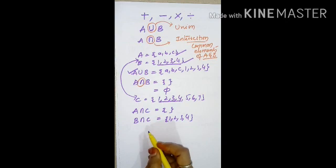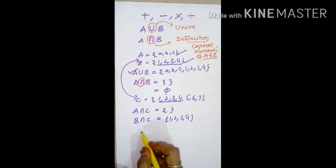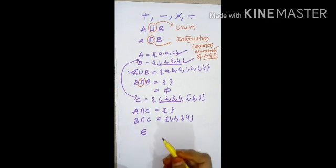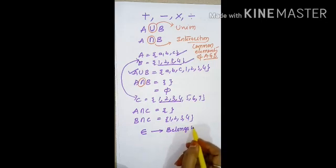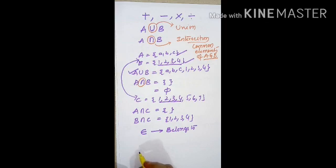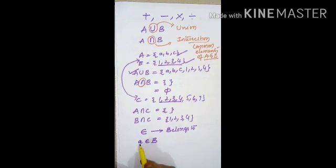Later we will discuss some symbols. Sometimes we are writing curved E like this. This means belongs to. Element A belongs to set B means A is an element and B is a set.